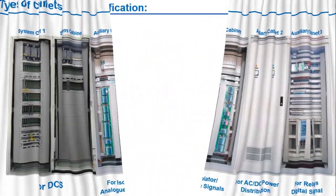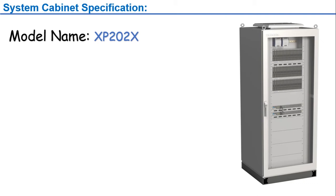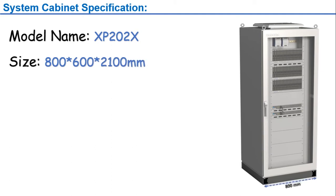Now we will see the system cabinet for the GX300XP system. The model name of the system cabinet is XP202X. The normal dimensions of the panel are 800 mm wide, 600 mm deep, and 2100 mm in height.